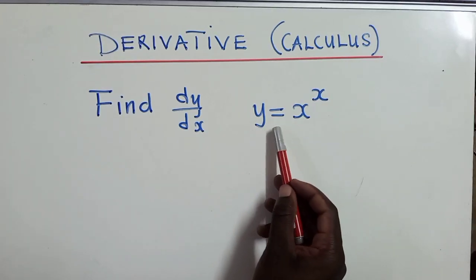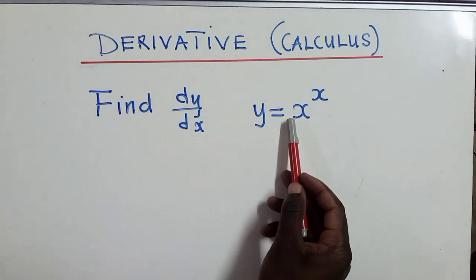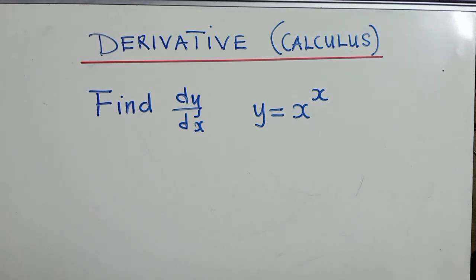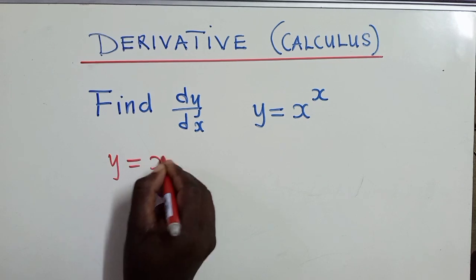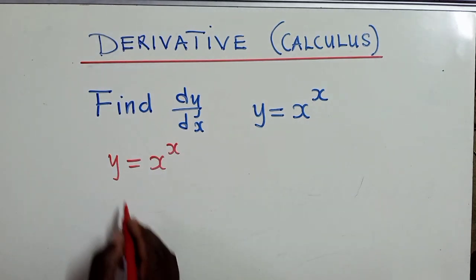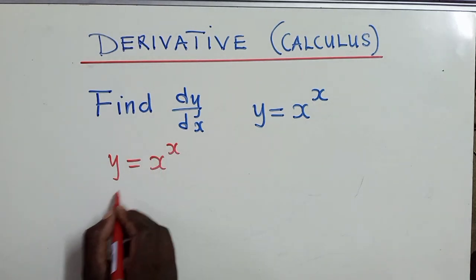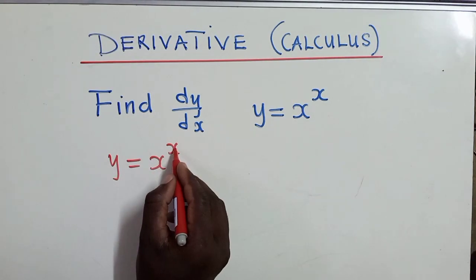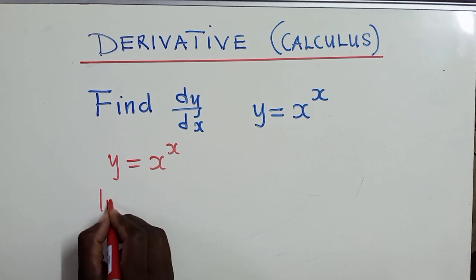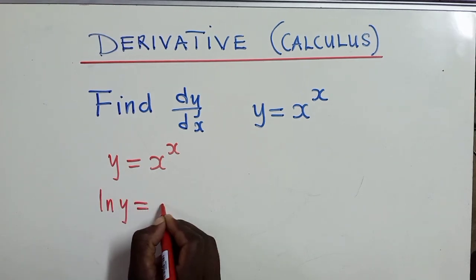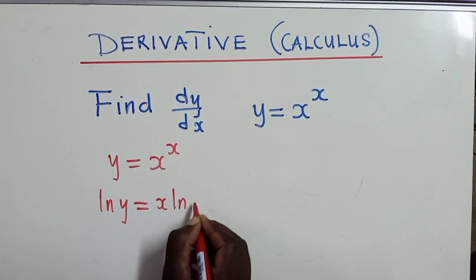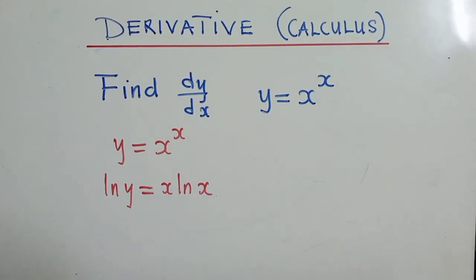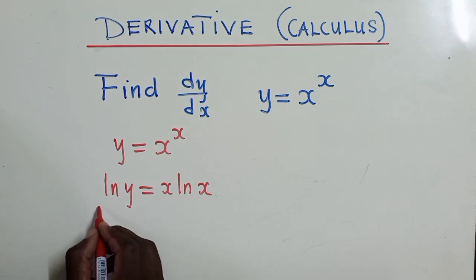How do we find dy/dx when y is equal to x^x? We copy what we have and apply the natural log to drop the power, so we get ln(y) is equal to x·ln(x). That's the first step.